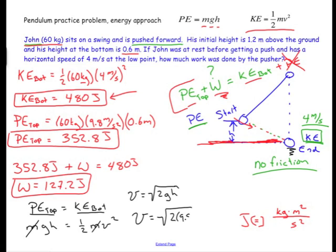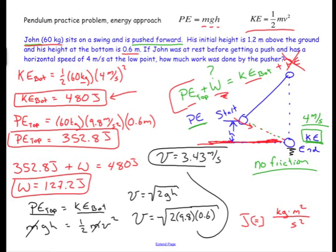So the V that we would have gotten out of this if there was no push would have been 2 times 9.8 times 0.6. And I'm going to write it up here. So that V would have been 3.43 meters per second. So that's the ideal velocity if there was no push.